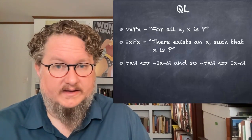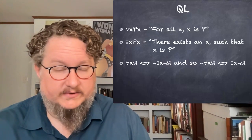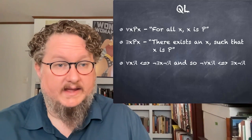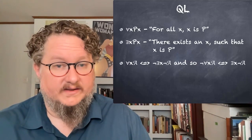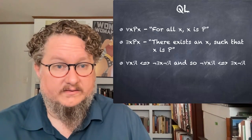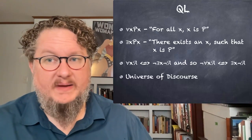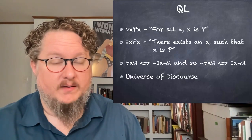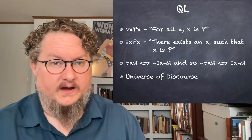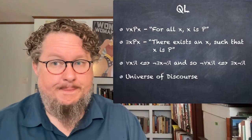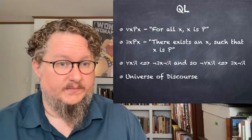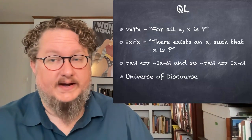We also have this equivalency between the two quantifiers: for all X, A — where A is some arbitrary sentence — is equivalent to 'there does not exist an X that is not A.' And also, 'it is not the case that for all X, A' means 'there is some X such that not A.' Another important feature of QL is that we have to specify a universe of discourse whenever we are making translations to and from English — what kinds of objects our variables are going to quantify over. For example, we might have a universe of discourse that is animals.